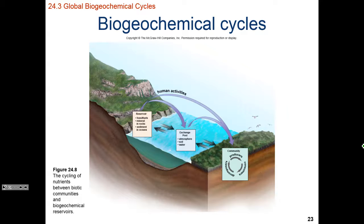To summarize a basic biogeochemical cycle: nutrients from a reservoir are made available and put into the exchange pool by either human activities or animal activities. From the exchange pool, those nutrients can be put back into long-term storage through inorganic and organic processes.